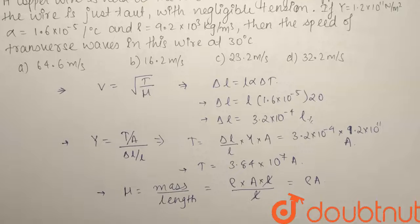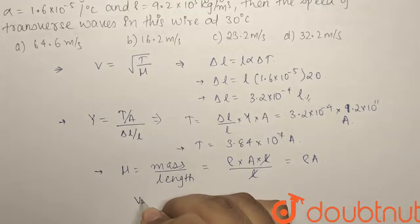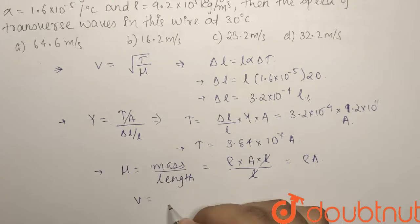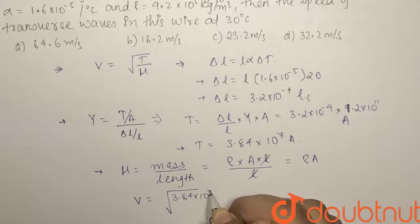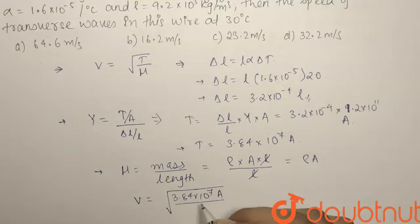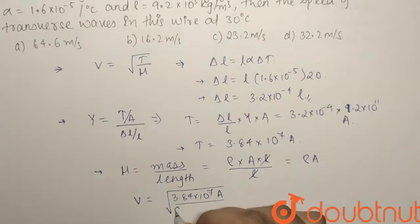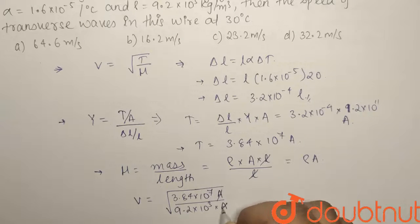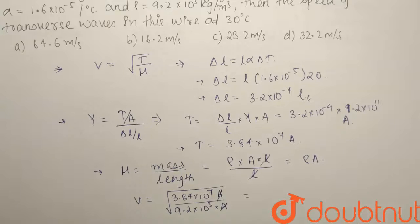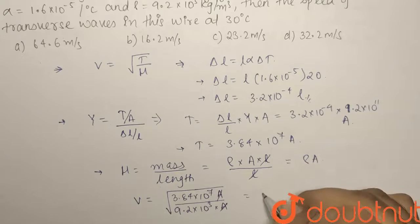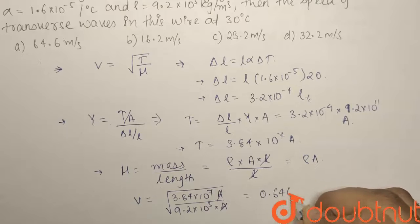To find the velocity let us directly put in the values. V equals to tension we have just found out: 3.84 × 10^7 × the area A divided by mass per unit length, that is ρ. What is ρ? 9.2 × 10^3, so 9.2 × 10^3 × area. Area and area will cancel out.